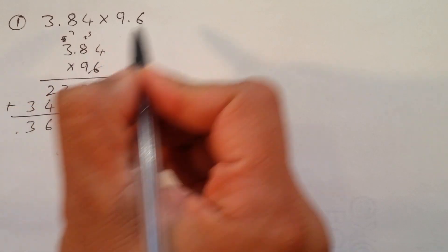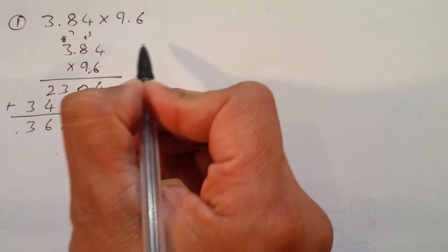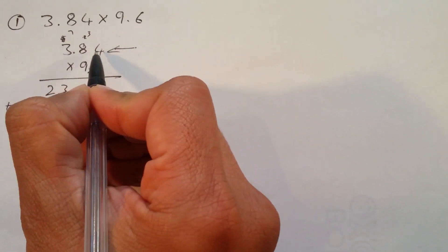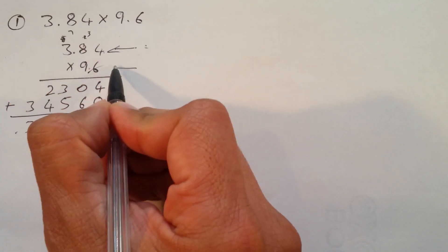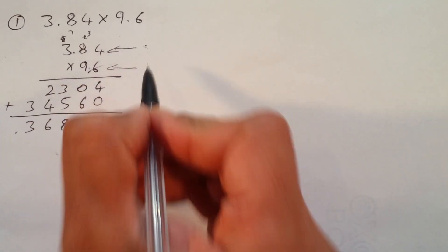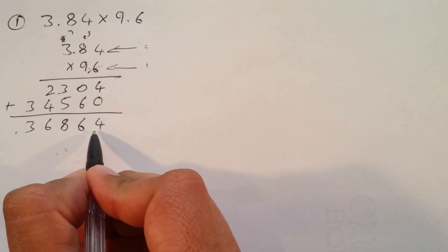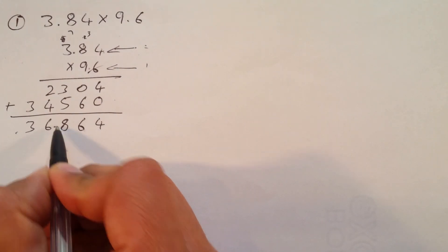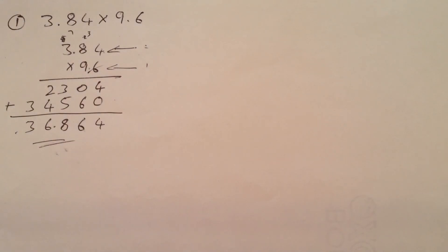Decimal after two numbers. Decimal after one number. So, from this side, decimal is after two numbers. From this side, decimal is after one number. 2 plus 1, 3. So, here it should be after one, two, three numbers. Done. That's an easy trick.